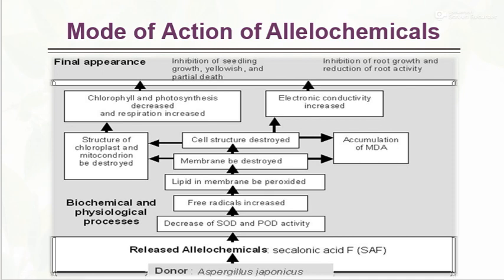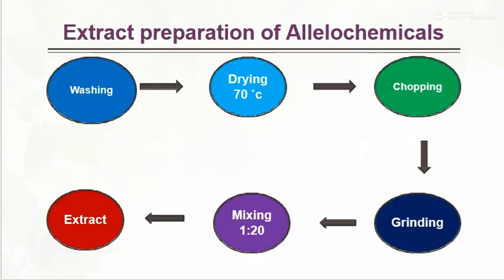Additionally, there is inhibition of root growth and reduction of root activity. Extract preparation of allelopathic chemicals involves washing, then drying at 100% and 70%, followed by chopping, grinding, mixing in a 1:20 proportion, and extraction.